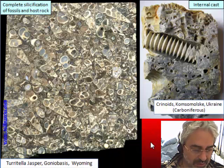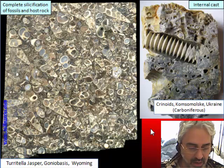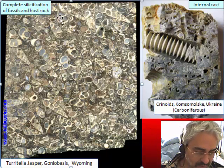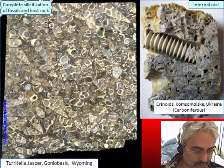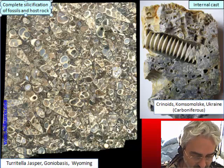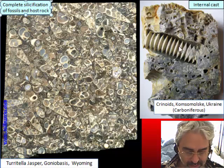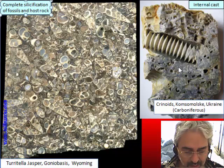There is the possibility that an entire rock becomes silicified if the original rock has a silica content. For example, this Turritella jasper from Wyoming has a high carbonate content and is completely transformed into jasper — not only the shell but the whole rock is jasper. This is another example from Ukraine where all the rock is silica containing a piece of crinoid.